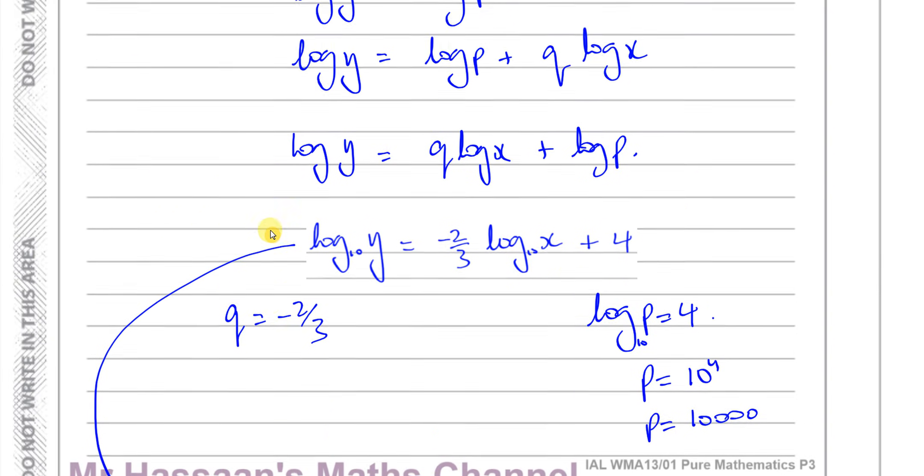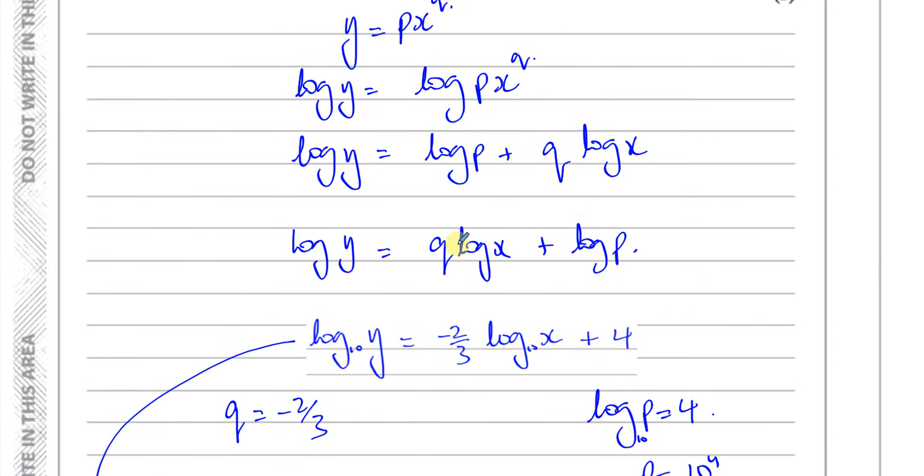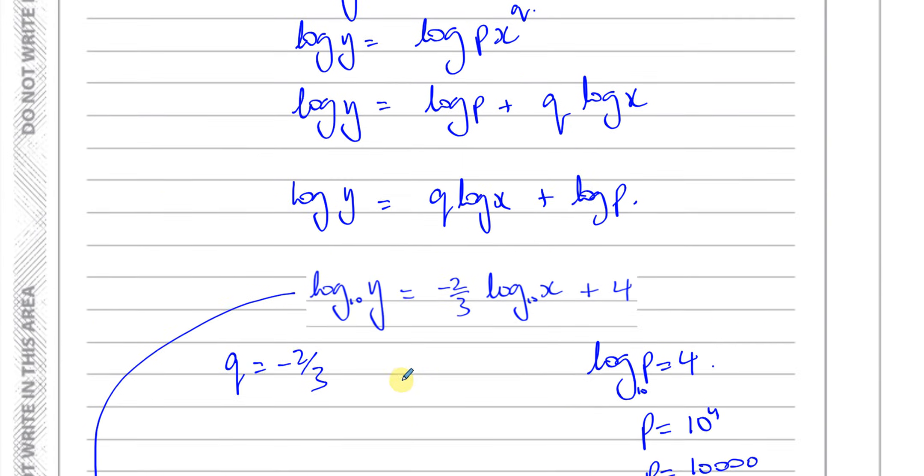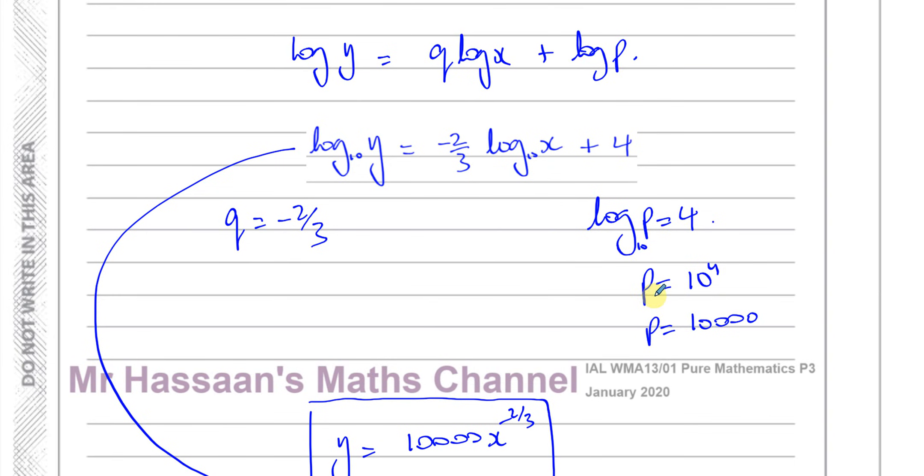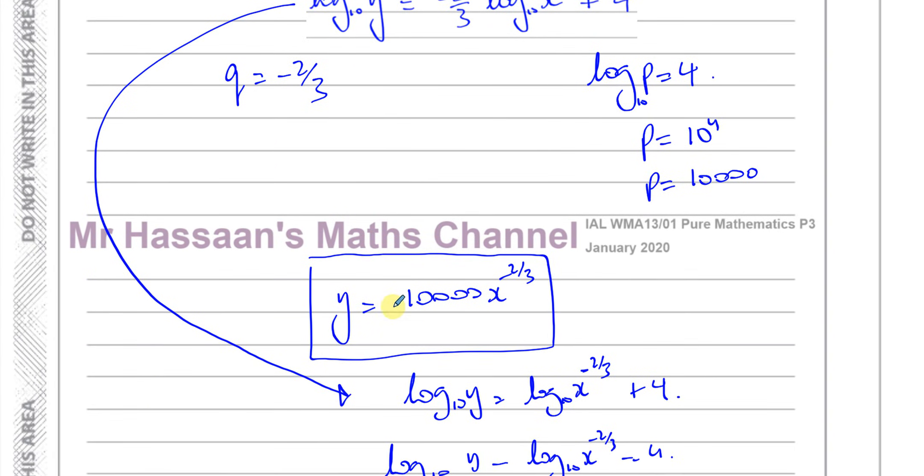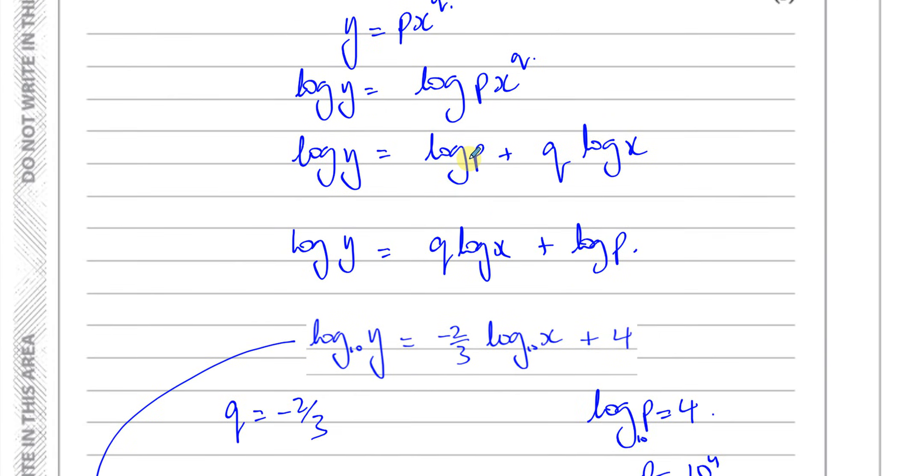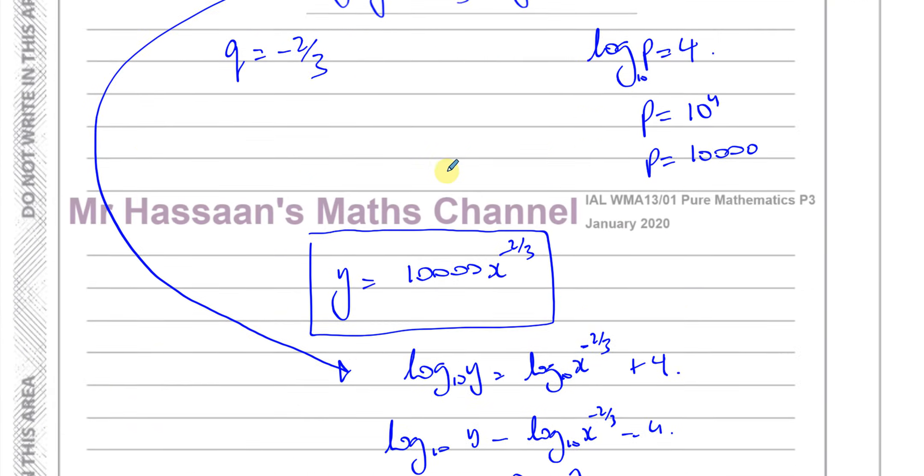And this is the way where we just basically find the value of q and p from what we found earlier by splitting this up and then working out, we can just replace the p and the q in the equation that they gave us. So, there's two different ways we could have done that. Either of them is fine.